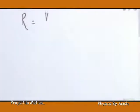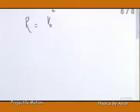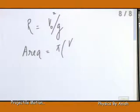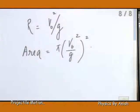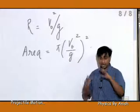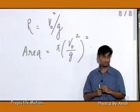The area will be a circle. This particular area — calculated using that radius — is the region in which all bullets will fall.